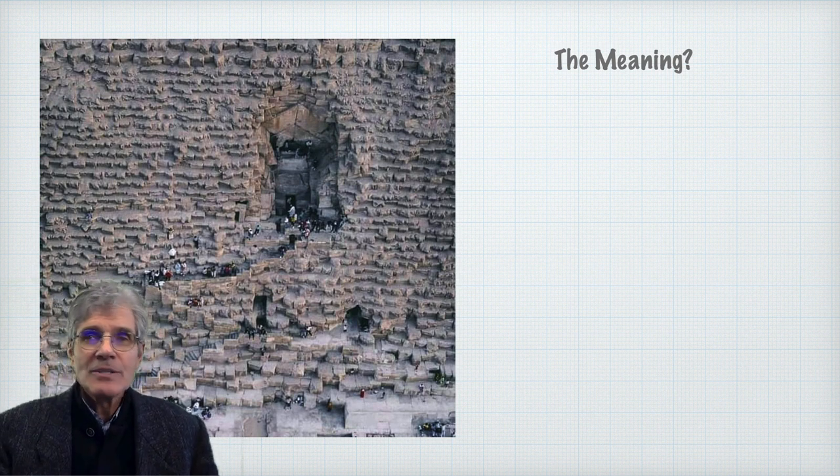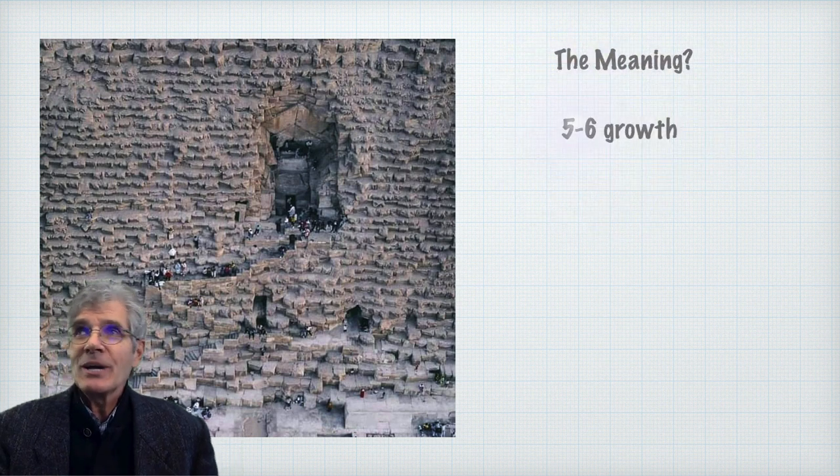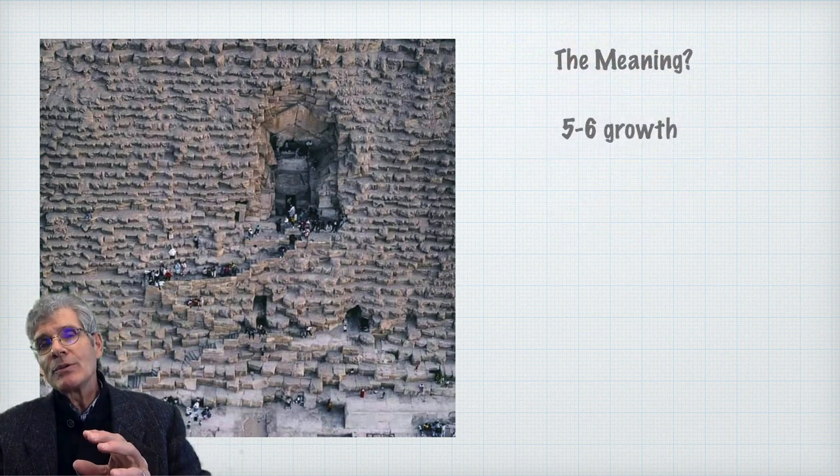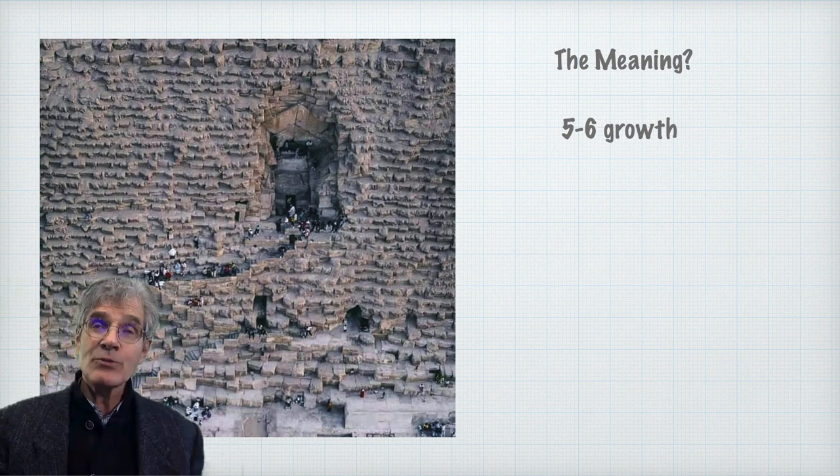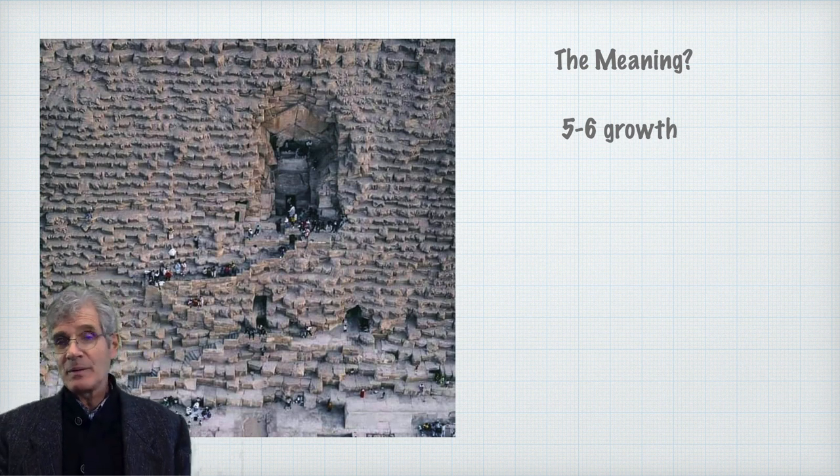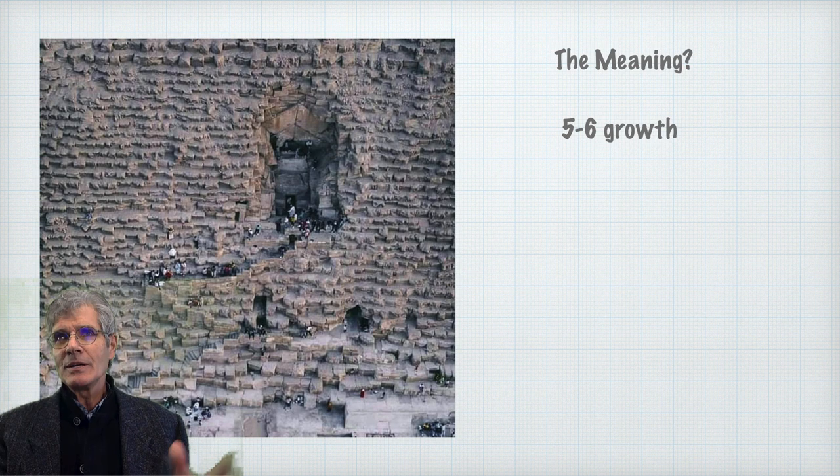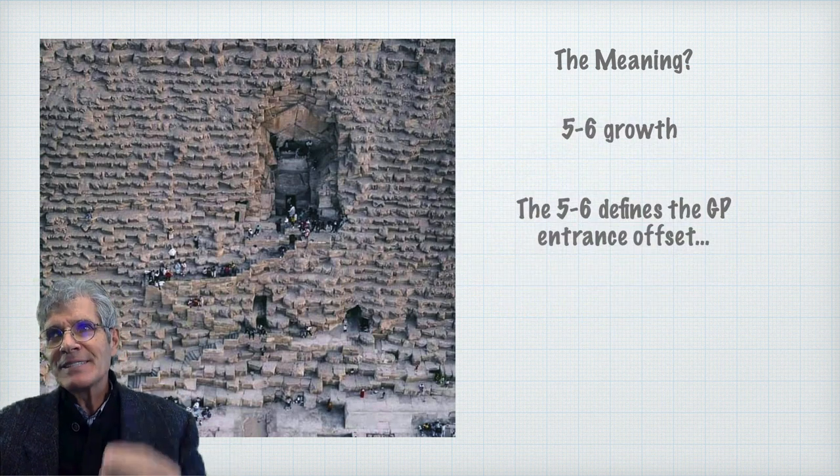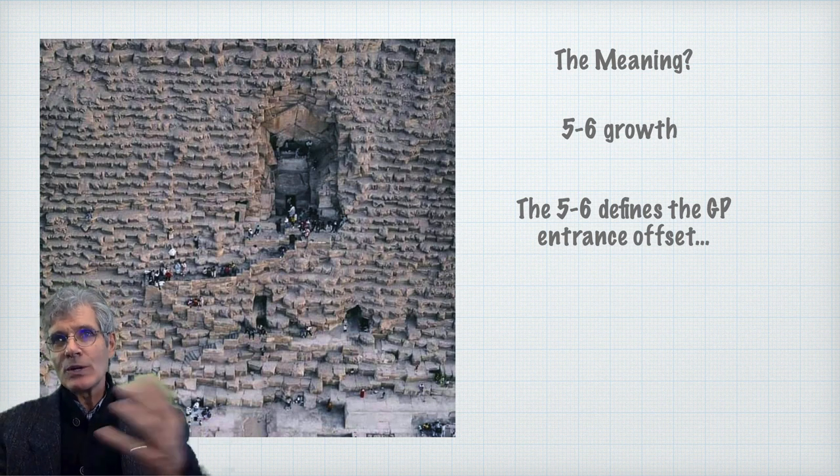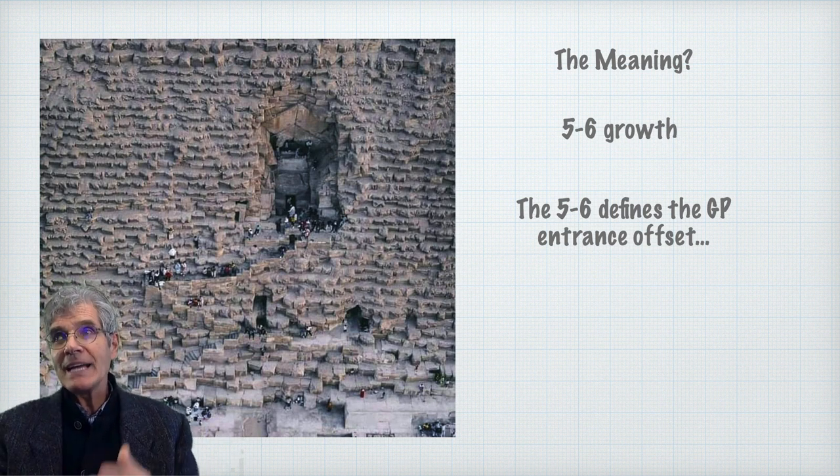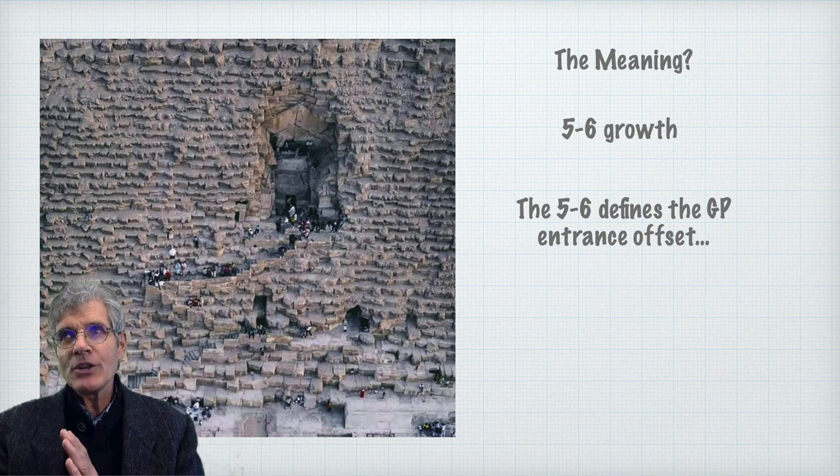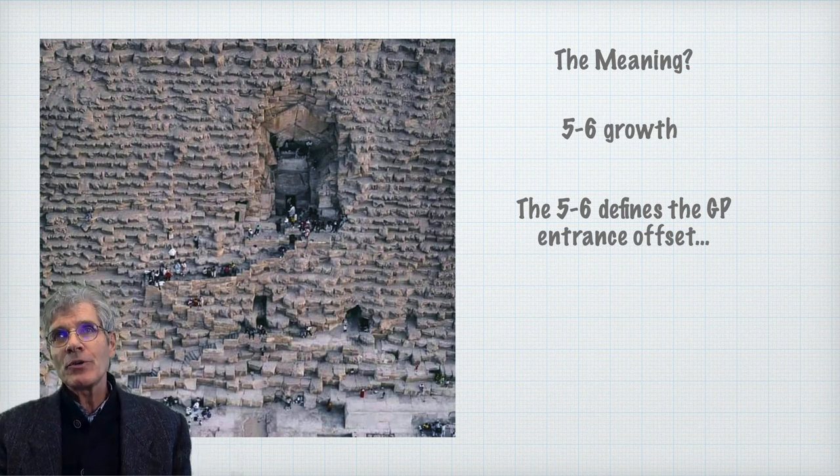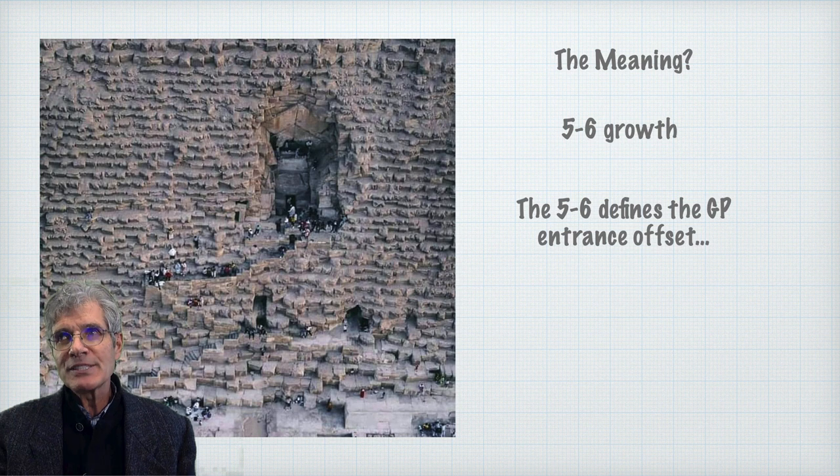And here's the finale of this little presentation. We saw that drawing the 5-6 takes growth, even being interested in it. Some people probably think, what are you talking about? So there's a growth process that's involved here. The 5-6, the merger of the 5-6, once you do grasp it and draw it, defines the geometry, the offset geometry, of the original entrance to the Great Pyramid. It's offset, and the 5-6, the merger of the pentagon and the hexagon, defines it.